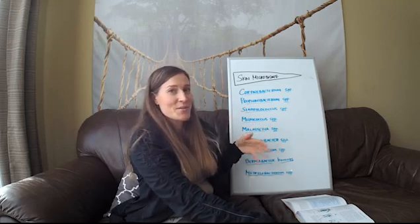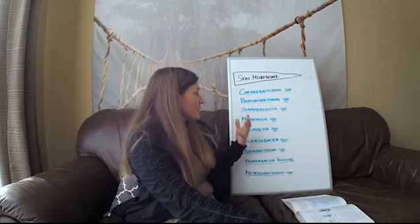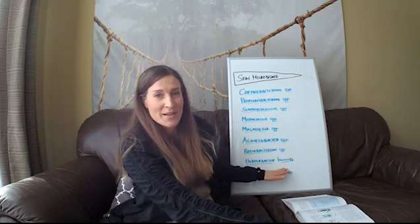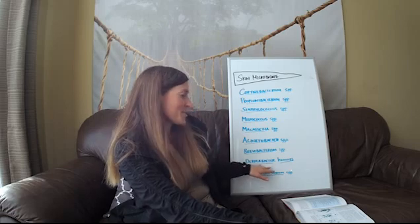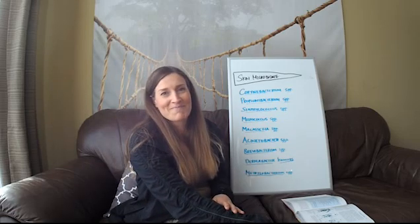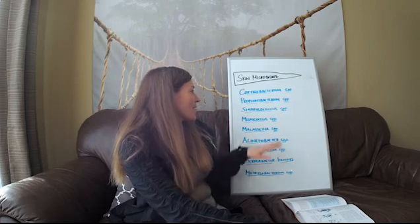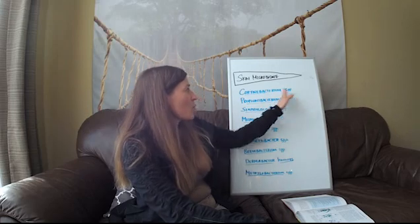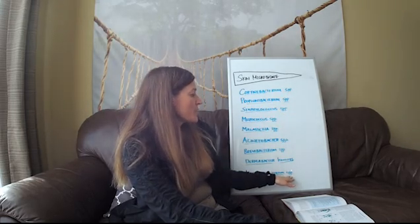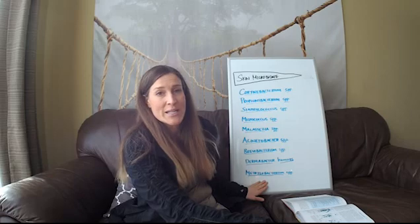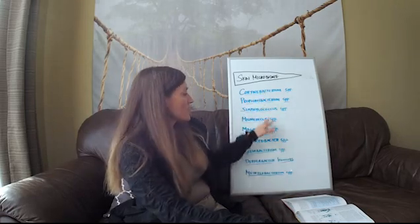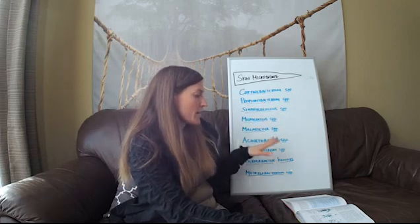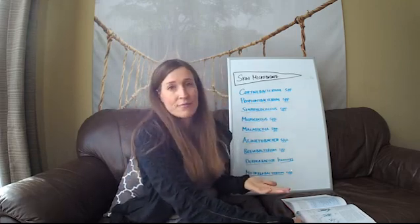You just want to make sure that your immune system's strong enough to prevent that from overgrowing. There's also one called Dermabacter hominis, which I thought was a nice little name, basically meaning skin bacteria for on humans. Pretty cool. Micrococcus, there's just these many different kinds of bacteria and it says species here, which means there's many different species of that genus that grow on the skin. So this is the genera that grow on the skin, that are native to the skin.